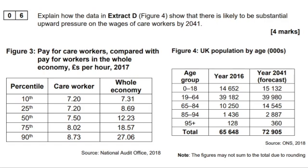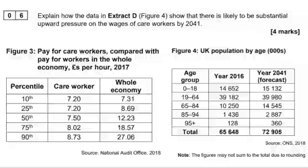Here's an example from paper one: 'Explain how the data in Extract D, Figure 4, shows that there is likely to be substantial upward pressure on the wages of care workers by 2041.' You can see Figure 3 and Figure 4, but the question only asks about Figure 4 — so don't look at Figure 3. Use the data: you have age groups, the year 2016, and forecasts to 2041. One weak answer reads: 'When considering the rapid growth in the elderly population, one would expect demand for care to rise rapidly, and thus derived demand for care workers to also rise, causing upward pressure on wages.' The explanation is good, but it doesn't include any quantifiable evidence.